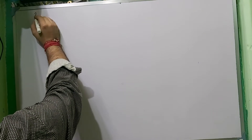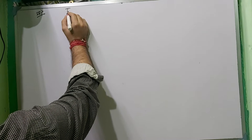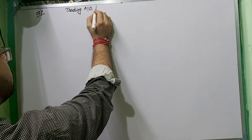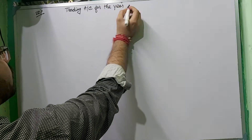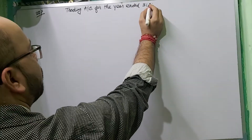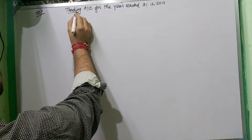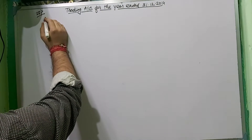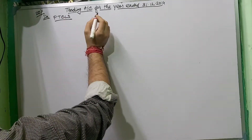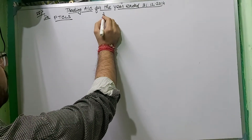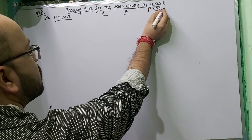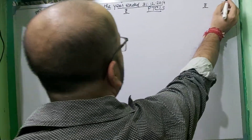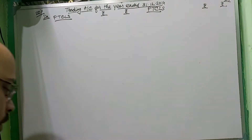So we follow the trading account first — we have to compute the Trading Account for the year ended 31st December 2014. This is sum number 28 in my book, and the PDF has been provided to you. The format has debit and credit sides with columns for particulars and amounts in rupees.